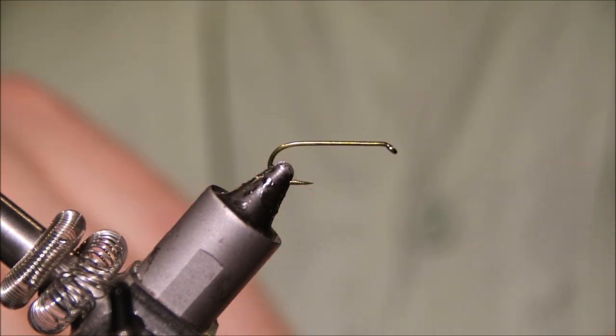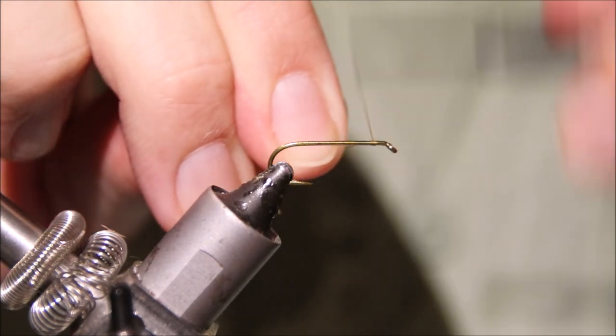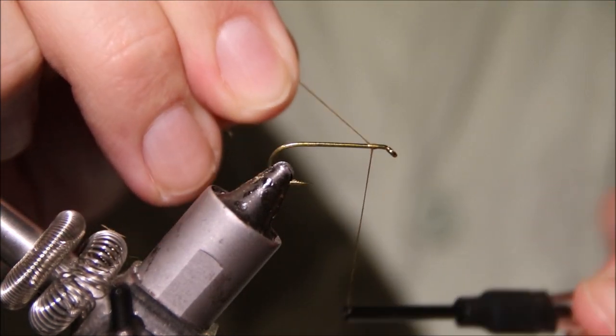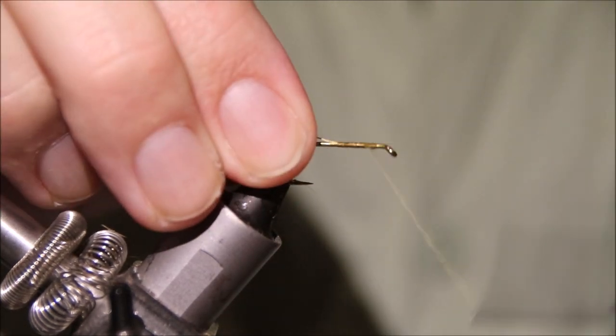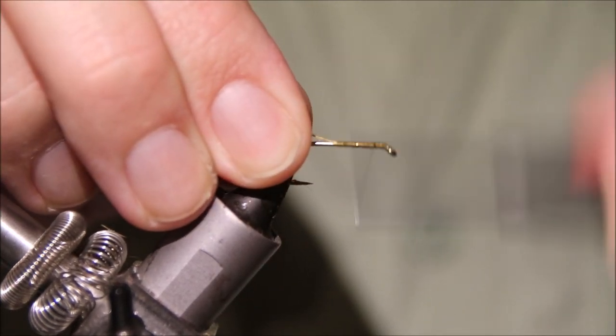This is a TMCO 5262, a 2X long limb hook. I'm starting with some 140 UTC in olive, but any thread in a brown or olive color will do fine.